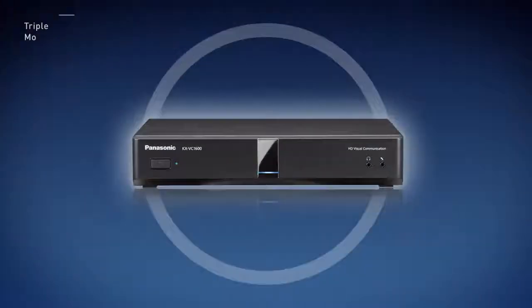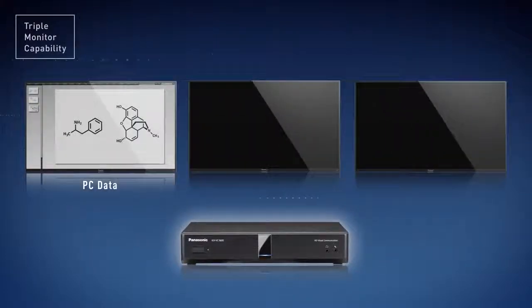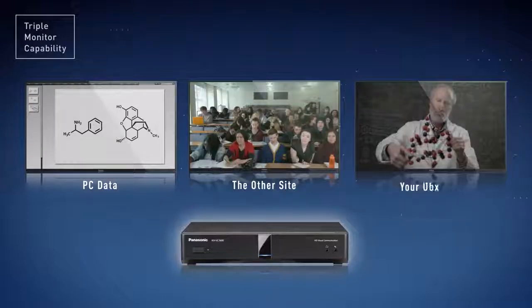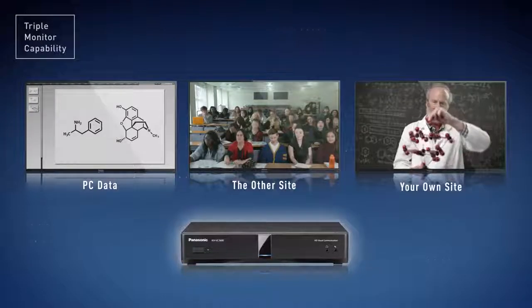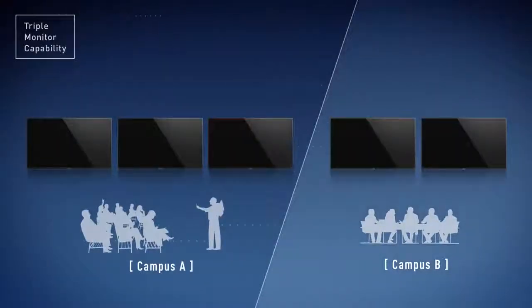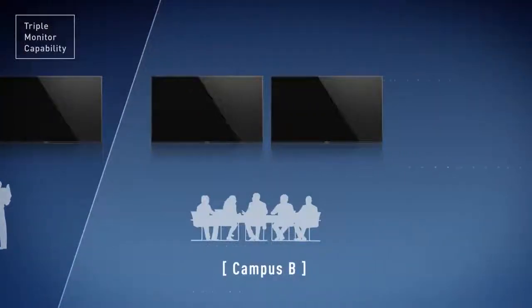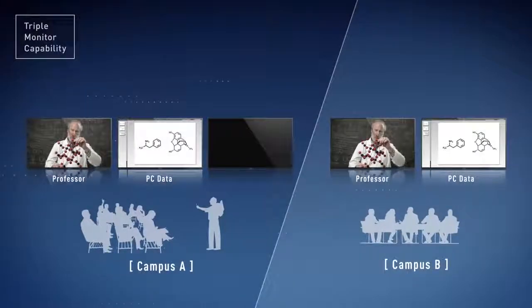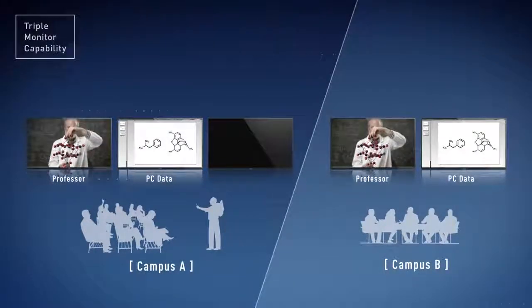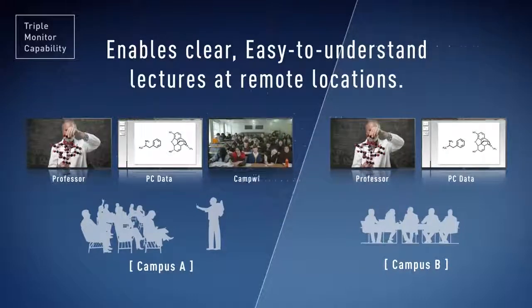Triple monitor capability. The HD Visual Communications System lets you display images of PC data, the other site, and your own site simultaneously on three monitors. For example, lectures can be given at remote universities. Both the students at Campus A and the students at Campus B can watch the professor and PC data on a large screen, and the professor can carry out the lecture while checking the condition of the students at Campus B.